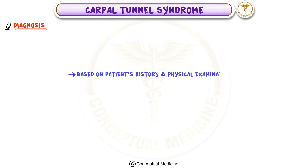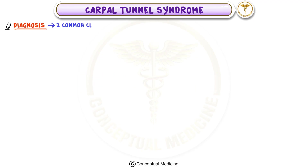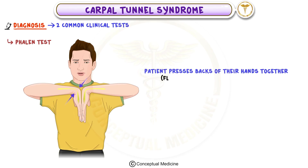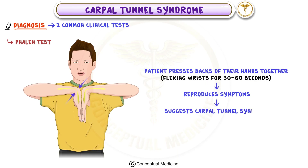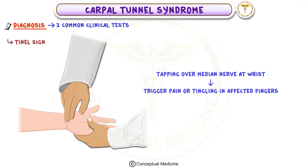Diagnosis of carpal tunnel syndrome is mainly based on the patient's history and physical examination. Doctors look for risk factors like repetitive wrist motions or systemic conditions like hypothyroidism. Two common clinical tests help confirm the diagnosis: the Phalen Maneuver and the Tinel Test. In the Phalen Maneuver, the patient presses the backs of their hands together, flexing the wrist for 30 to 60 seconds. If this reproduces the symptoms, it suggests carpal tunnel syndrome. The Tinel Test involves tapping over the median nerve at the wrist, which may trigger pain or tingling in the affected fingers.